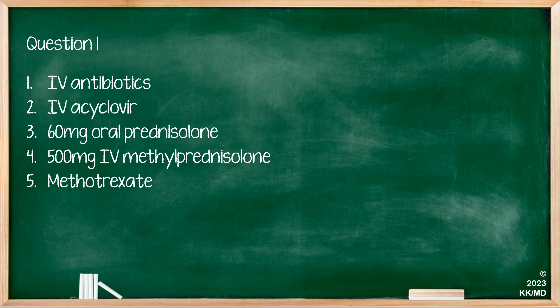This is a classical description of GCA — an elderly gentleman with headache and visual problems. Crucially, because this patient already has visual signs and involvement, the appropriate treatment is hospital admission for pulsed IV methylprednisolone. Therefore, option D is the correct answer.